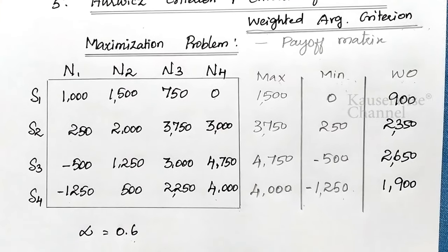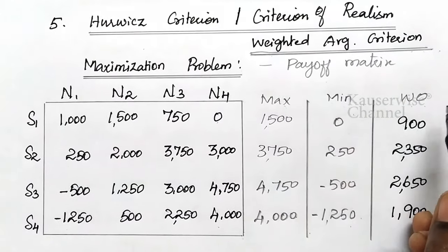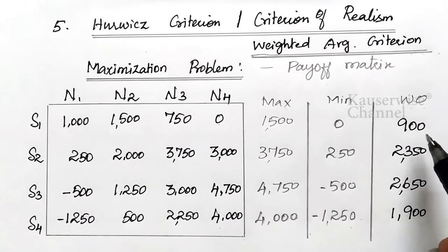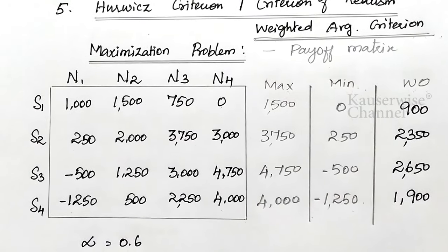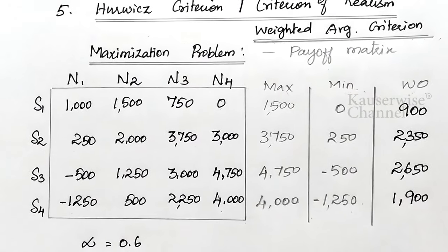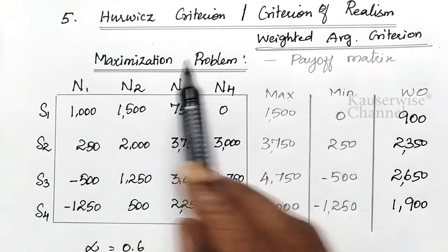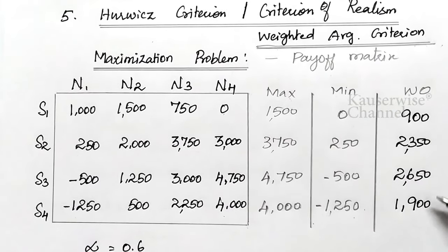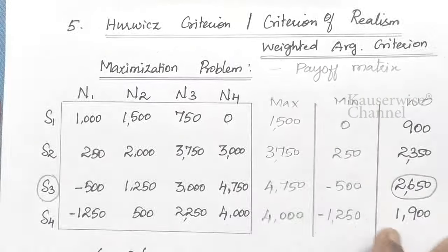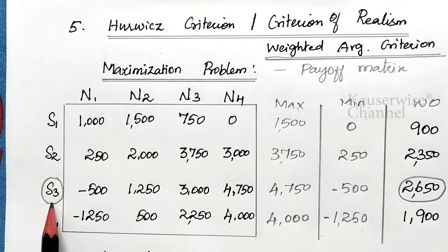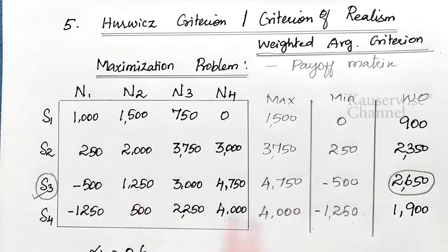According to Horvitch criterion, for a maximization problem, you select the maximum weighted outcome. The weighted outcomes are 900, 2350, 2650, and 1900. The maximum is 2650. Therefore, S3 is selected as the best alternative for implementation.